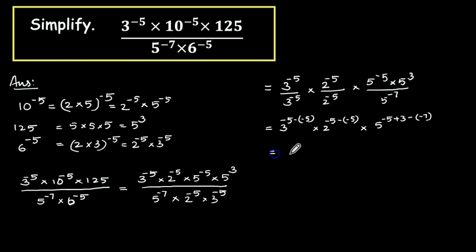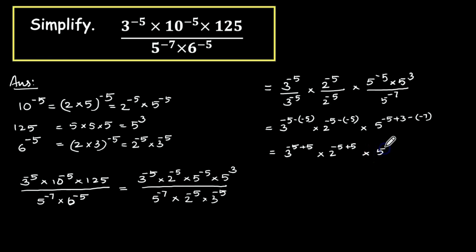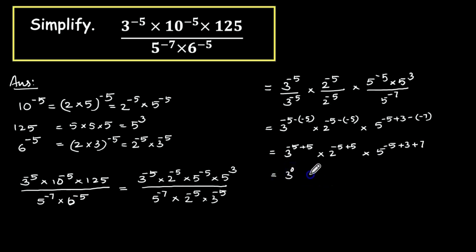We know that 3 raise to minus 5 minus of minus 5 is 3 raise to minus 5 plus 5, into 2 raise to minus 5 plus 5, into 5 raise to minus 5 plus 3 plus 7. So, 3 raise to 0 — since minus 5 plus 5 becomes 0 — into 2 raise to 0. When we solve the exponent for 5: 7 plus 3 is 10, 10 minus 5 is 5, giving 5 raise to 5.